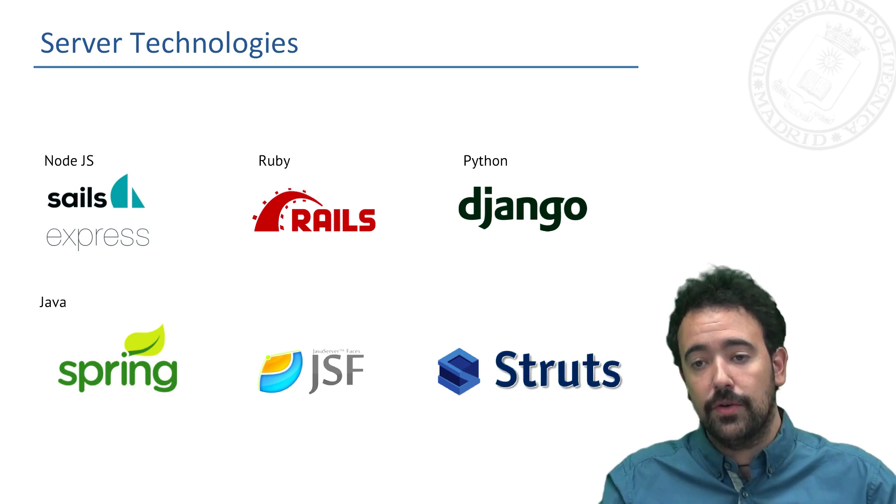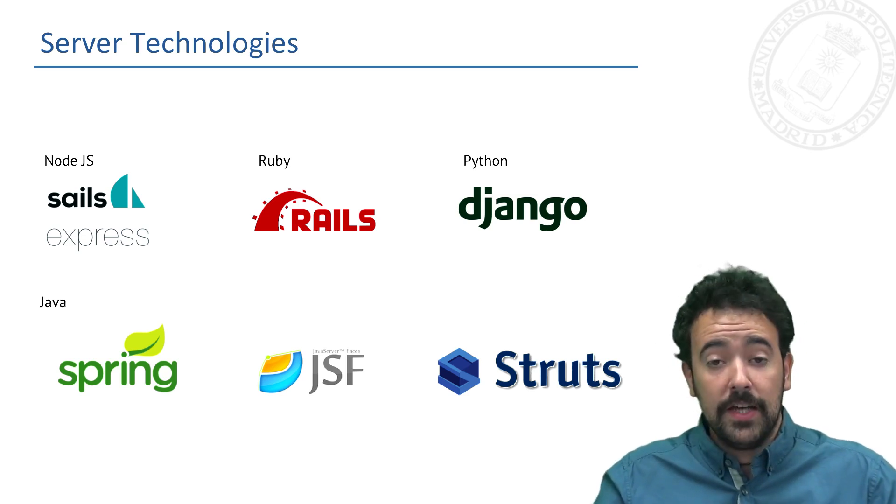We have Rails for Ruby, Django for Python, or for Java-based implementations we have Spring, Struts, or JSF as you can see in this slide.